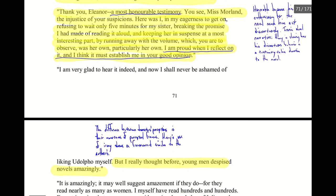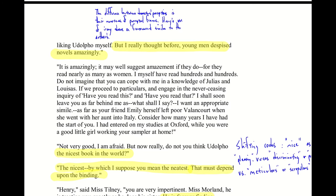Henry responds ironically: 'Thank you, Eleanor. A most honorable testimony. You see, Miss Morland, the injustice of your suspicions. Here was I, in my eagerness to get on, refusing to wait only five minutes for my sister, breaking my promise of reading aloud, and keeping her in suspense at a most interesting part.' Catherine says she is glad to hear it, and will never be ashamed of liking Udolpho herself. This introduces an interesting discussion of gender politics, as Henry claims expertise in an area — the novel — that is supposedly particularly feminine. There is not time to fully discuss that aspect here, but it might be a good topic for a paper.